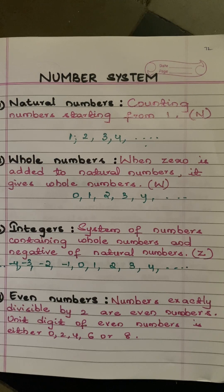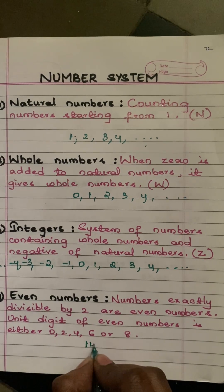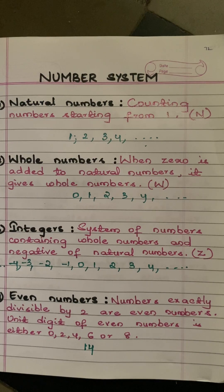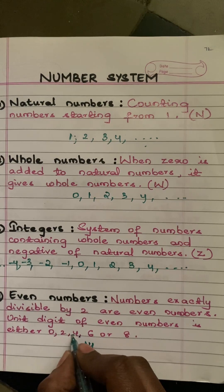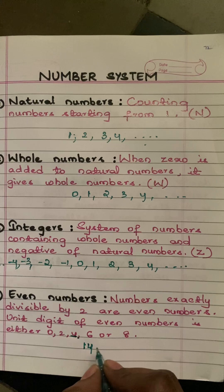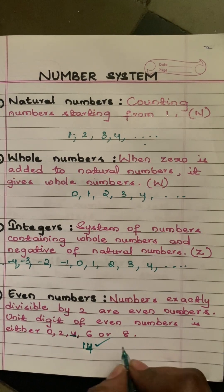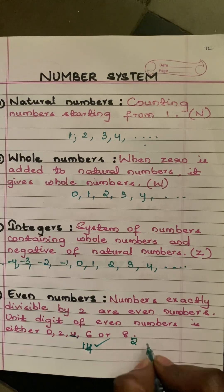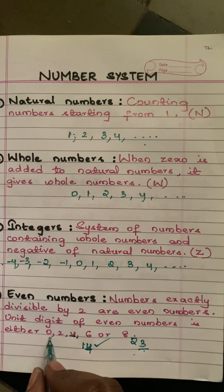Next comes even numbers. Numbers that are exactly divisible by two are even numbers. The unit digit of even numbers is either zero, two, four, six, or eight. For example, take the number 14 — is it exactly divisible by two? Yes. The unit digit is four, which is in the set, so it is exactly divisible by two.